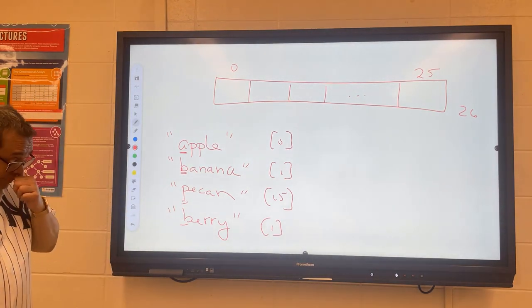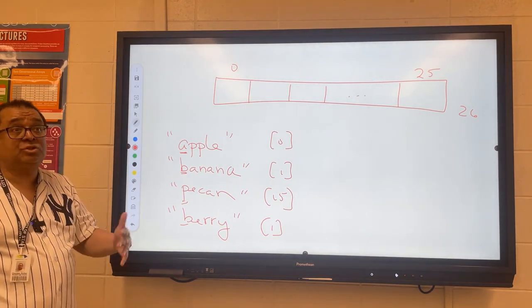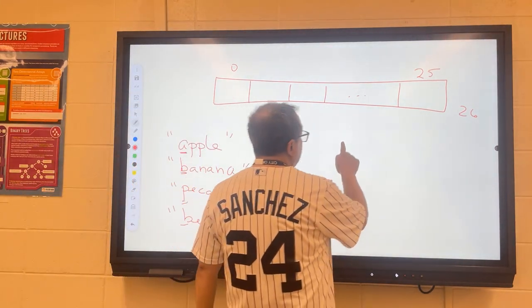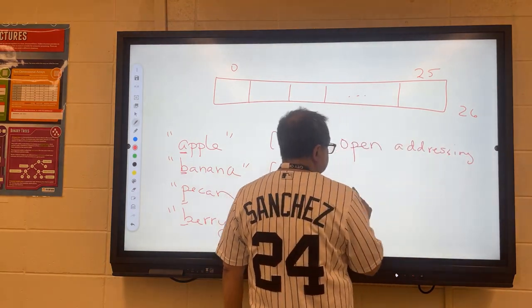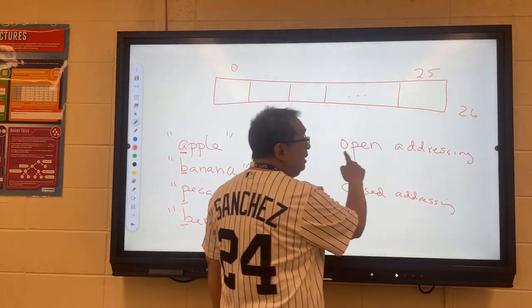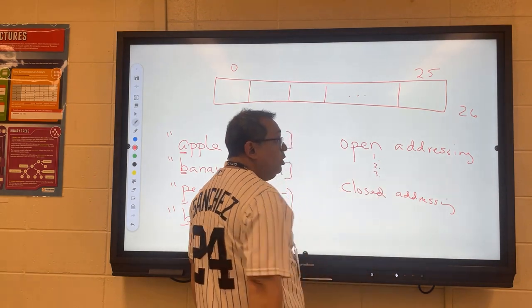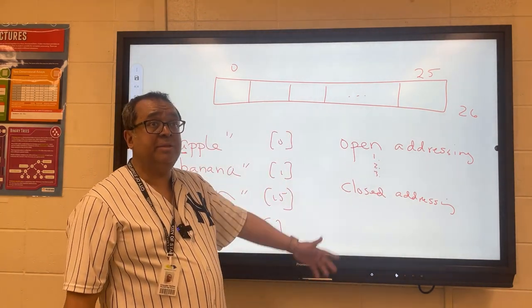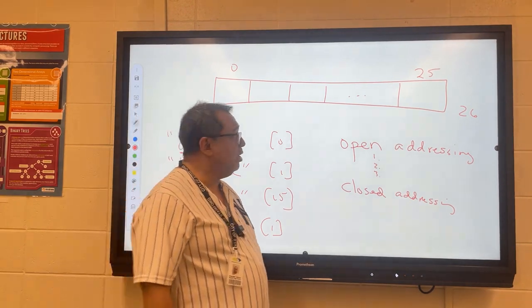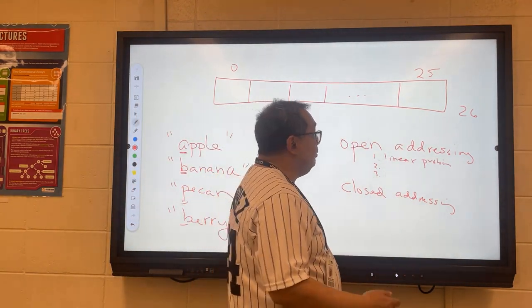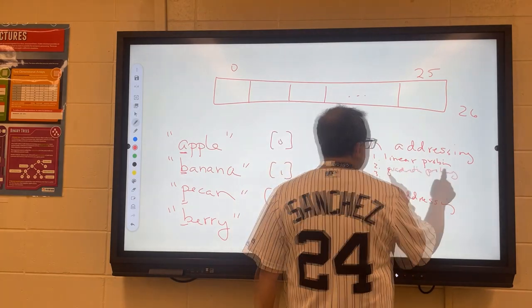It turns out that a hash table like this has two different ways of dealing with collisions. One is called open addressing and the other is called closed addressing. Open addressing itself has several different techniques that can be used. We're only going to discuss one of them in this class.